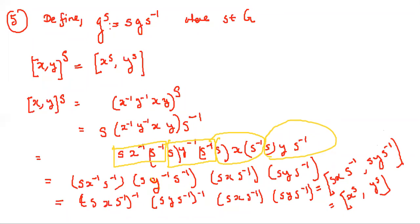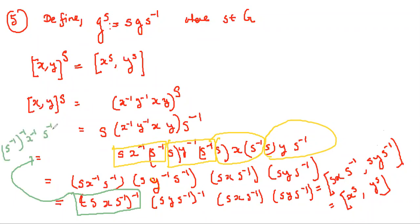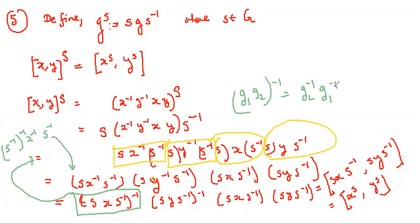A student asks: S X S inverse whole inverse becomes S inverse X inverse S, right? When you take the inverse, the order changes, so it becomes S inverse inverse X inverse S inverse, which is S X inverse S inverse — so that is correct. The property G1 G2 inverse equals G2 inverse G1 inverse is called the shoe-socks lemma, a term from the book by Gallian.